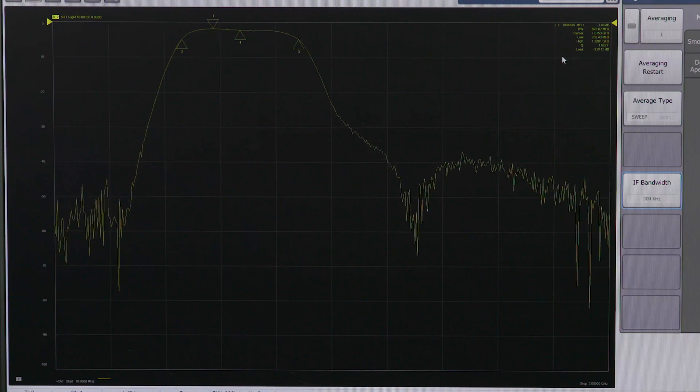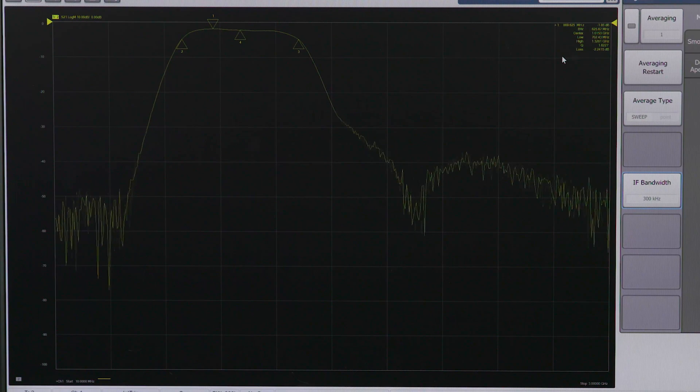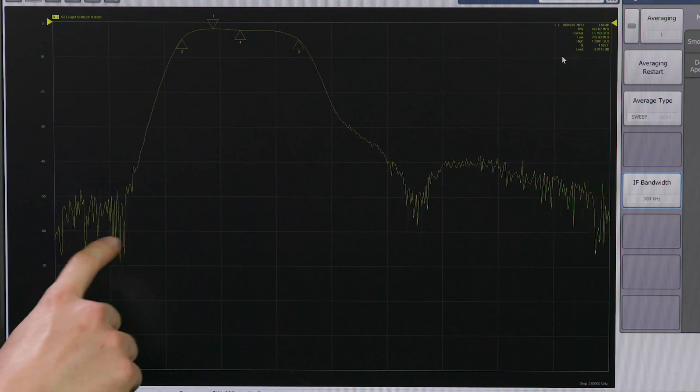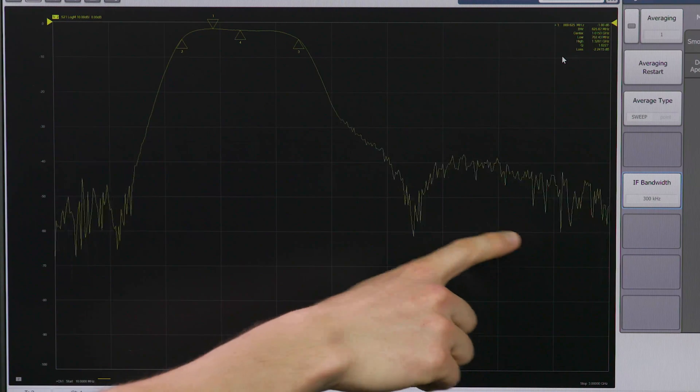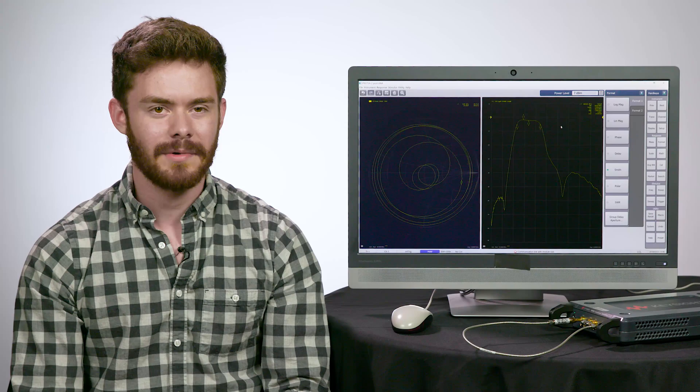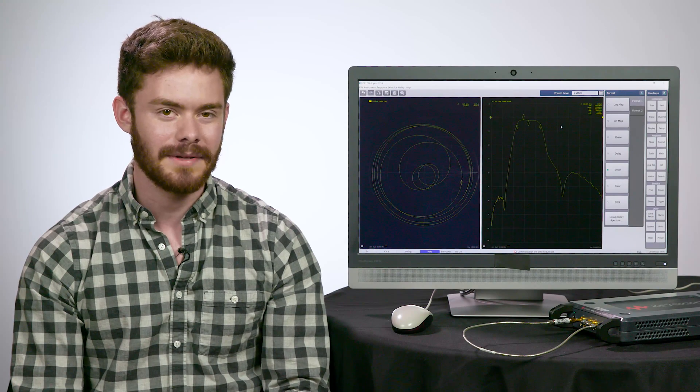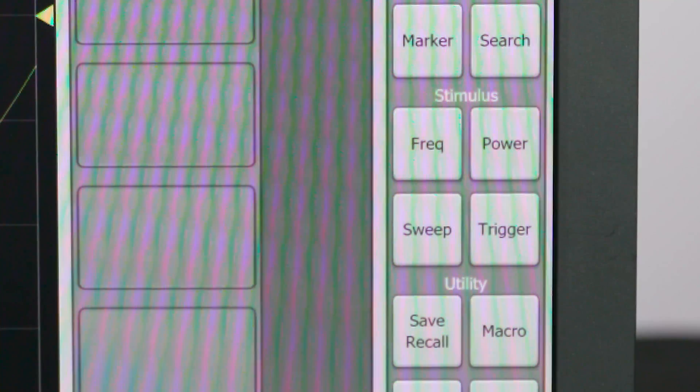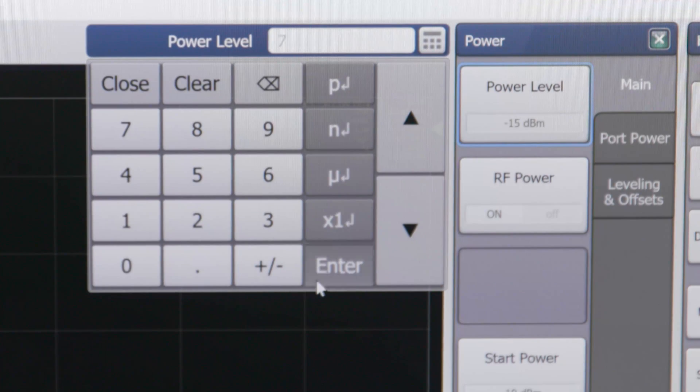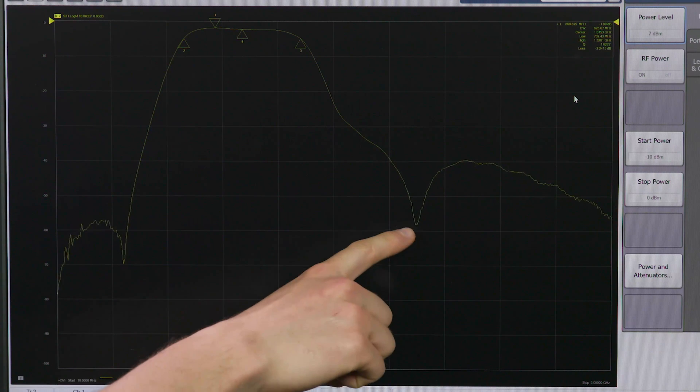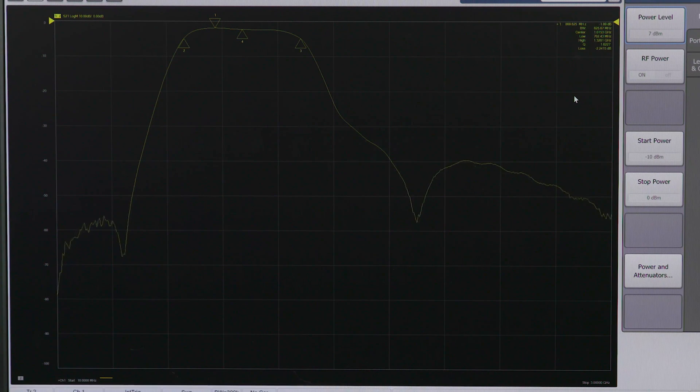However, the tradeoff is the higher the IF Bandwidth is set, the more random noise will be introduced to the measurement. You can see that increased noise here in the rejection bands below 350 MHz or above 2 GHz. To improve this signal-to-noise ratio to make more accurate measurements, we can increase the instrument's source power. I'll select Power and Power Level and enter 7 dBm. You can instantly see that the trace noise in the rejection bands has improved while maintaining that high measurement speed with 300kHz IF Bandwidth.